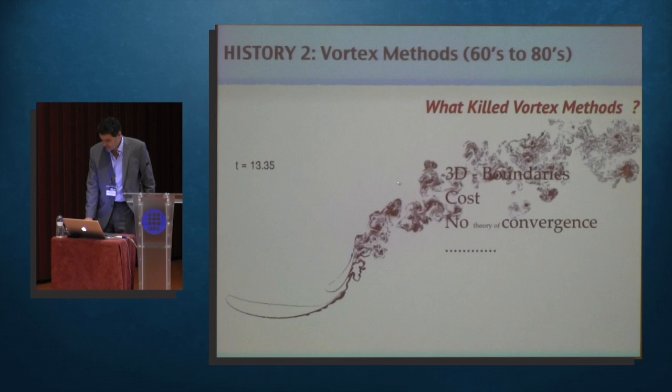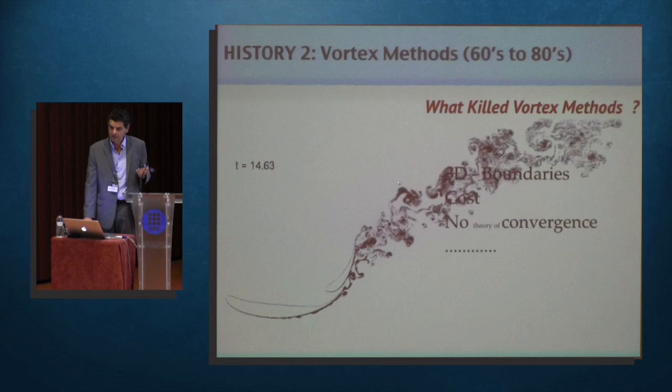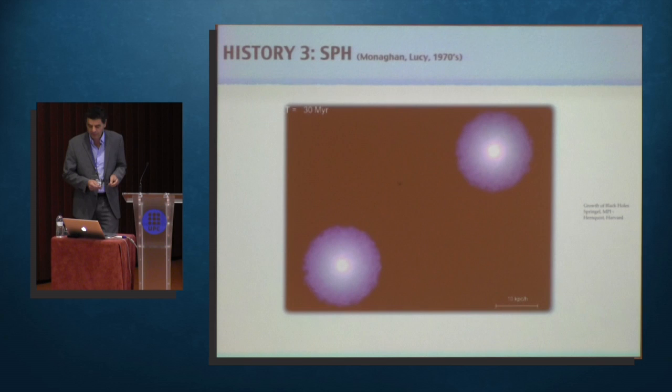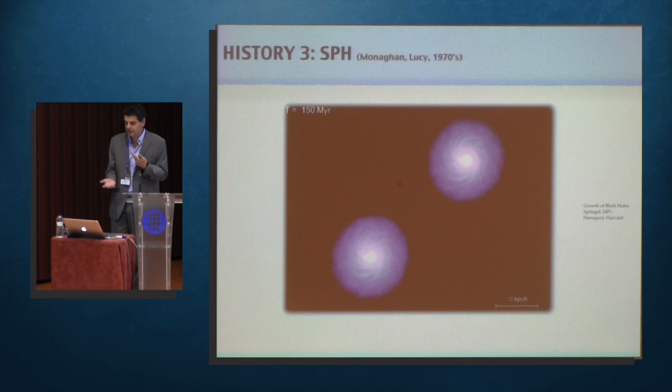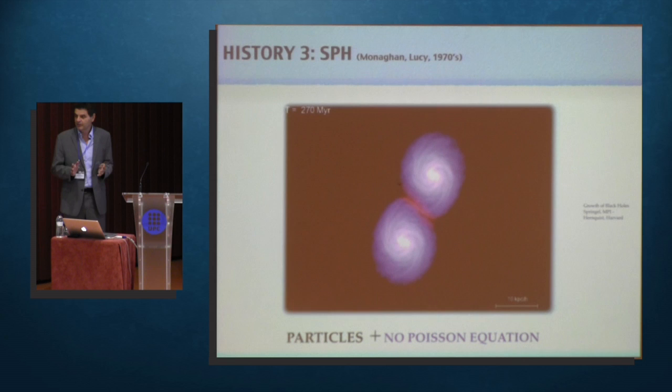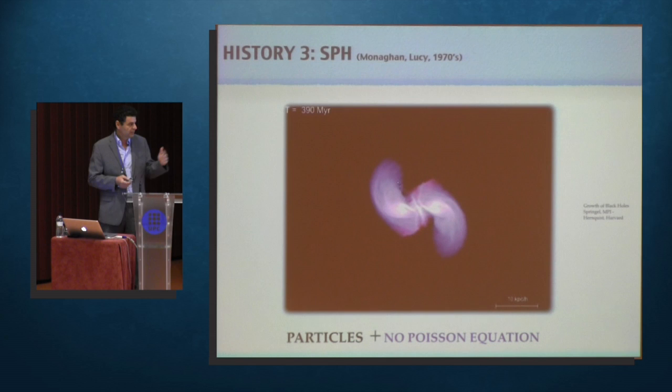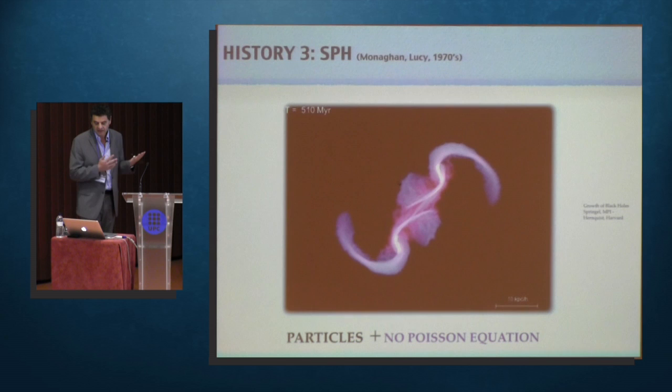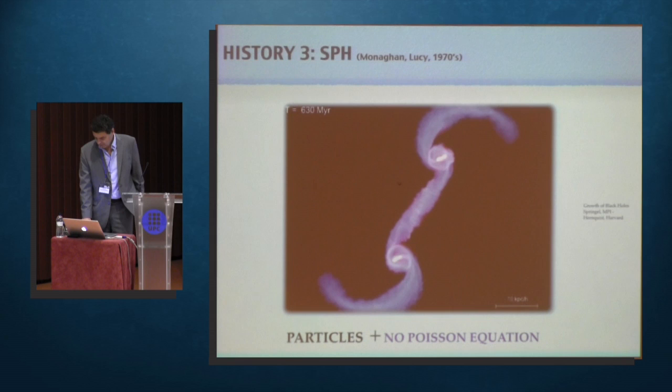Now, at the same time that vortex methods, which is the velocity vorticity form of the Navier-Stokes died, another method started to become very popular, and I'm sure many of you know it. It's smooth particle hydrodynamics, where what is unique here is you go back, instead of doing velocity vorticity, you're doing velocity pressure, and you have it easy because you don't have a Poisson equation. It's everything we were doing in vortex methods, but SPH working in velocity pressure does not assume a Poisson equation, so you don't have this cost of n squared that the vortex particles had. But I think all these other issues remained.